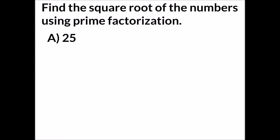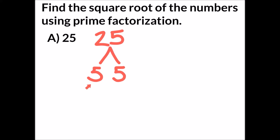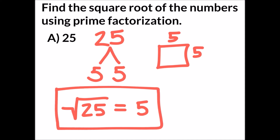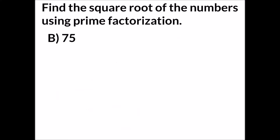The first example asks us to find the square root of numbers using prime factorization. Example A is looking at the square root of 25. To begin, I'm going to make my prime factor tree. 25 can be split up into the prime factors of five and five. On the side, I can rewrite this as a square with side lengths of five and five, and the square root of 25 equals five.